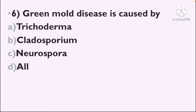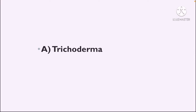Next question: Green mold disease is caused by — Option A: Trichoderma, Option B: Cladosporium, Option C: Neurospora, Option D: Algae. The correct answer is Option A, Trichoderma.